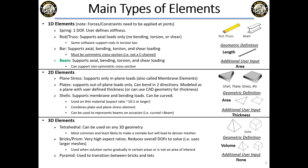A pyramid element is what you use to transition between brick elements and tetrahedral elements. For example on a rim, if you have bricks on the outside, you can't transition directly to tets, so you use pyramid elements.